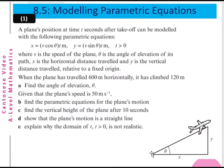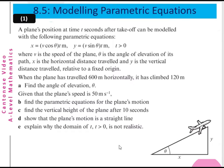The pen takes off from one point and moves to another. x equals v·cos(θ)·t, and y equals v·sin(θ)·t, where t is greater than 0, v is the speed of the pen, and θ is the angle of elevation of its path. x is the horizontal distance traveled and y is the vertical distance traveled, relative to the fixed origin — the point of takeoff.